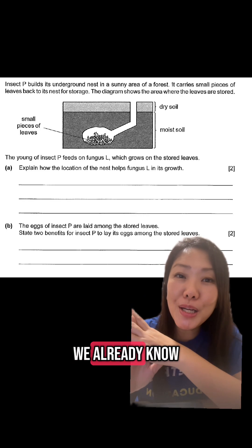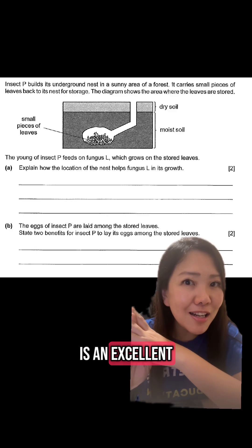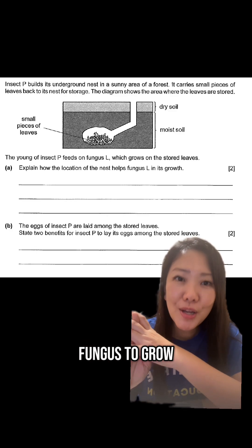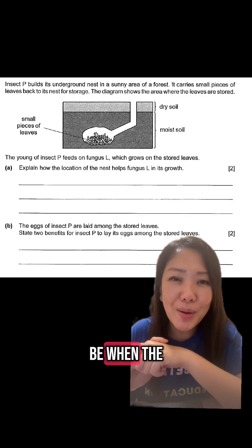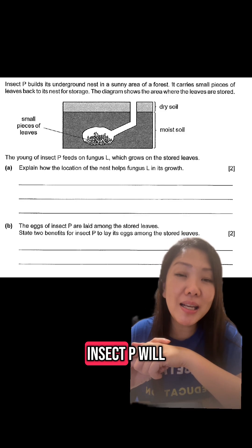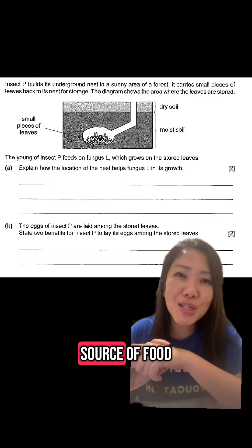From part A, we already know that the nest is an excellent location for the fungus to grow. So the very first benefit will be when the eggs hatch, the young of insect P will have a ready source of food.